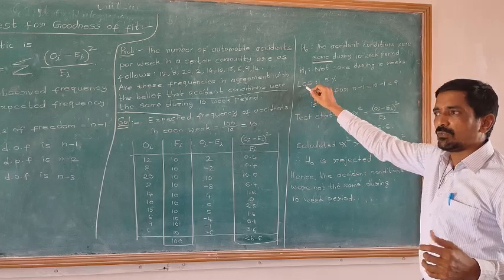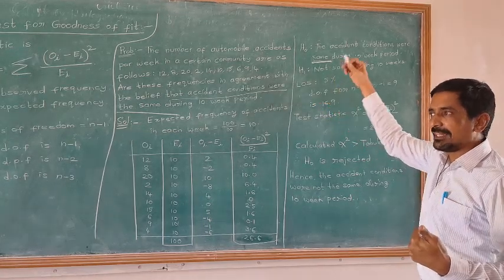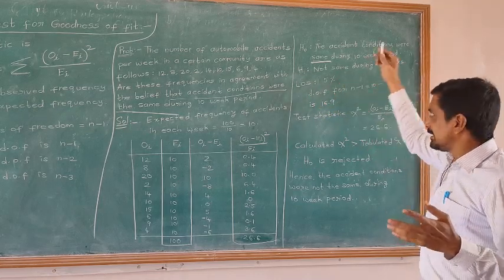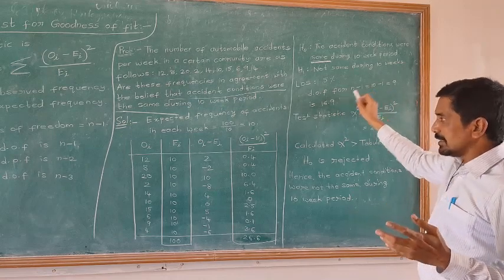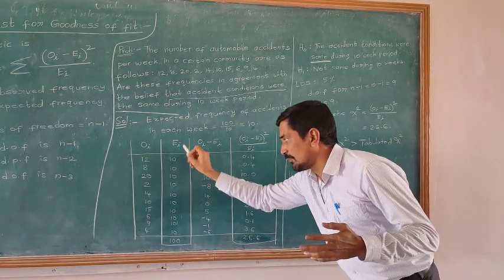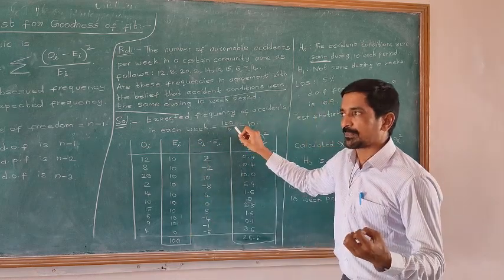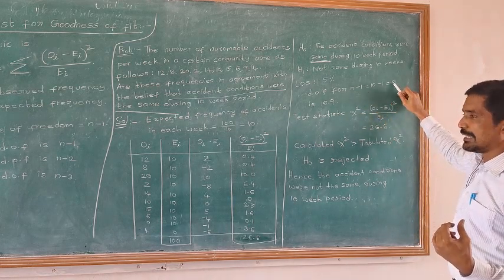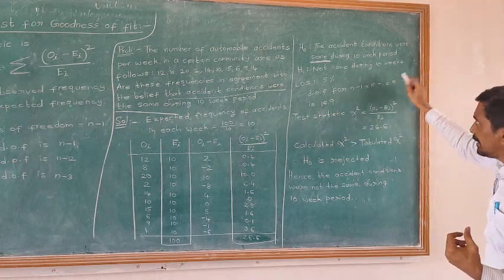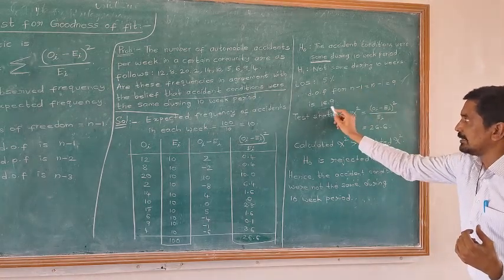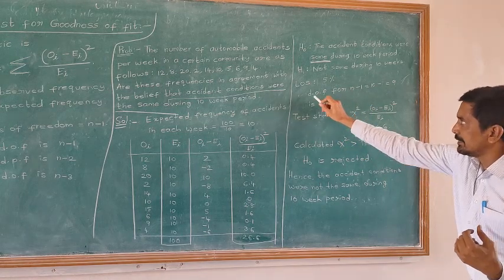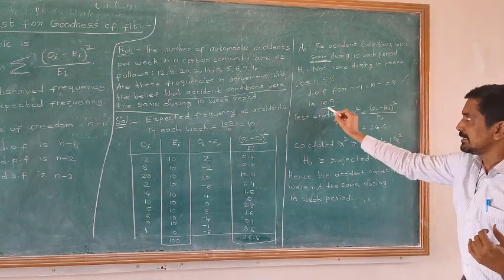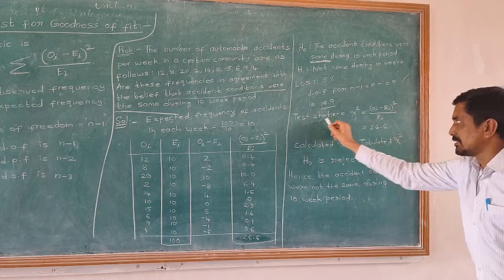We find the level of significance at 5%. Since we are finding the expected frequency by the normal method, the degrees of freedom is N minus 1. So N minus 1 equals 10 minus 1 equals 9. Under degrees of freedom 9, at alpha 5%, the table value is 16.9.